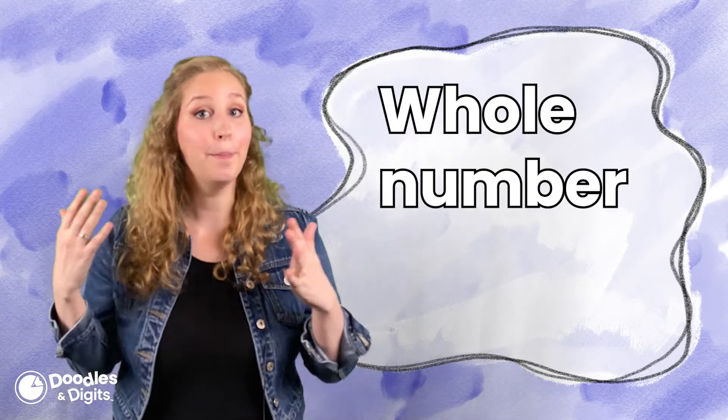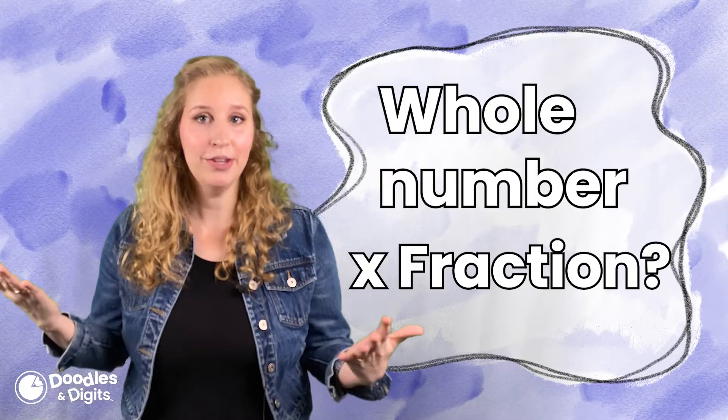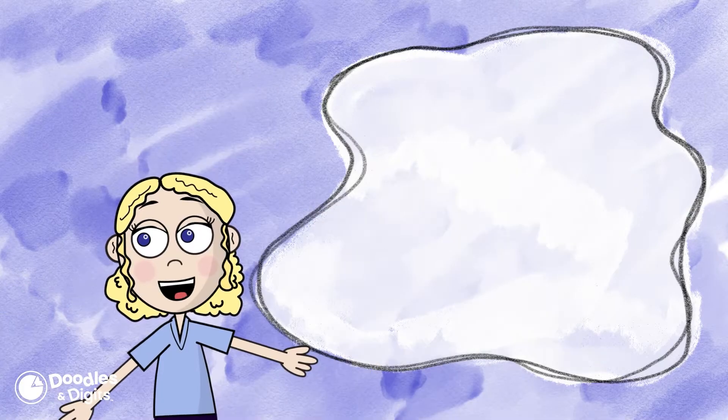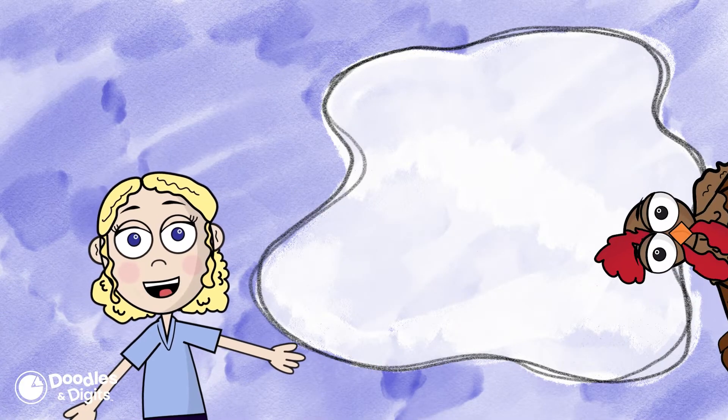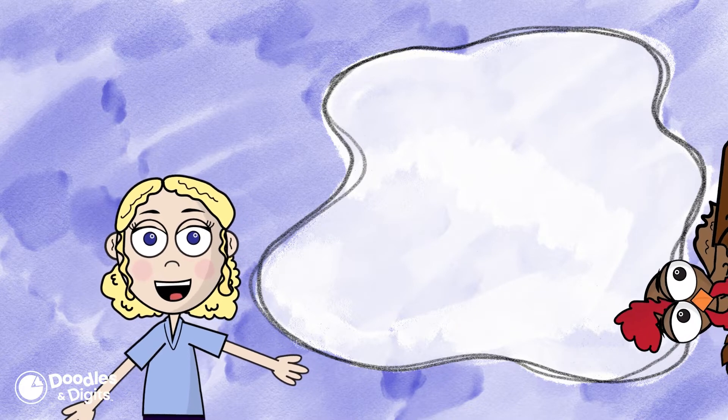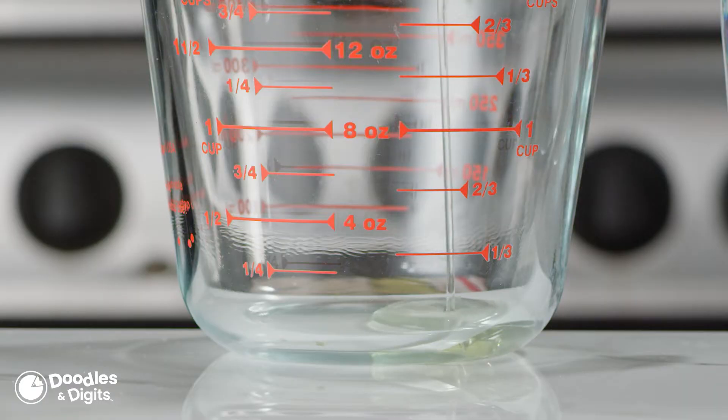All right, when do we actually need to multiply a whole number by a fraction? When do we use it in real life? There are multiple ways you're going to multiply a whole number by a fraction in real life. One of my favorite ways is actually cooking. So for example, if you need to double or triple a recipe, you're going to have to multiply those fractions of different measurements by whole numbers.